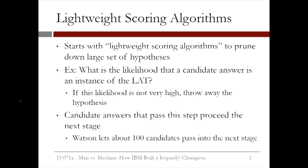First, Watson starts with lightweight scoring algorithms to prune down the large set of hypotheses. Recall that in step two, about 200 different hypotheses were generated. An example of a lightweight scoring algorithm is computing the likelihood that a candidate answer is actually an instance of the LAT. For the Mozart symphony question, where the LAT is 'this planet,' a candidate answer like Earth would have a very high score, but a candidate answer like the moon would have a lower score. If the likelihood is not very high, Watson throws away the hypothesis.